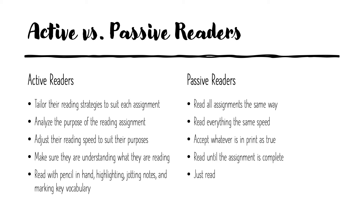For example, if you are reading something because you're going to have a discussion in class, you're going to read that differently than if you're reading something because you're going to take an exam on it. We're going to start working on how you can tailor your reading to suit each assignment. That also leads to analyzing the purpose of the reading assignment — understanding what you need to do after you finish reading will help you decide how you need to read it. Do you need to read every single detail, or do you just need to skim it? Active readers also adjust their reading speed to suit their purposes, determining if you need to read quickly or if you really need to slow down and analyze it deeply.